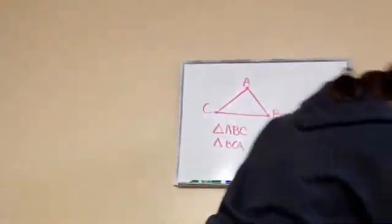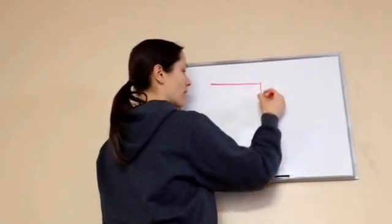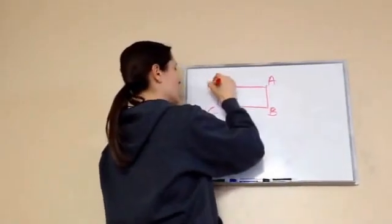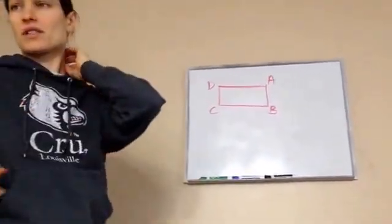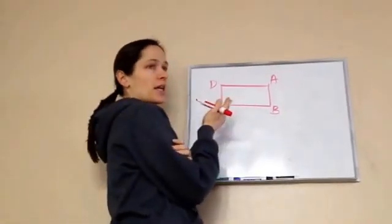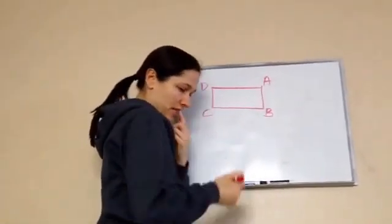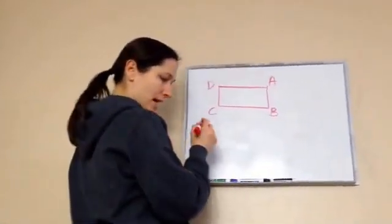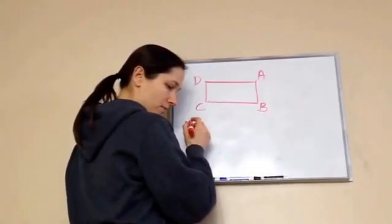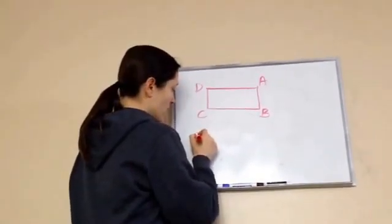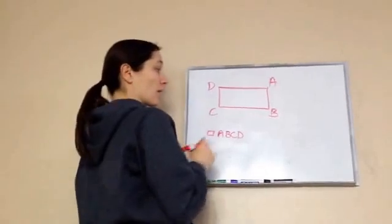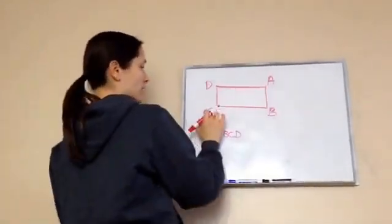Now if we were doing a square — I want you to see a rectangle. This is A, B — you can draw this if you want. So if I were to label this rectangle, here's what I would say: I can name it rectangle ABCD, or I could do BCDA, or I could do CDAB.